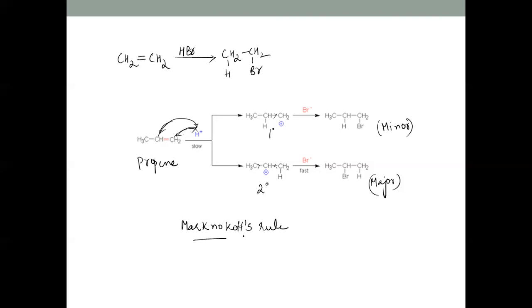Markovnikov's rule states that the negative part of the addendum (the halide, Br−) goes to the carbon with the lesser number of hydrogens. So in propene, H attacks the terminal carbon and Br− attacks the central carbon (which has fewer hydrogens), giving 2-bromopropane as the major product. This rule predicts the regioselectivity in addition to unsymmetrical alkenes.